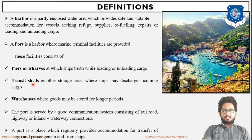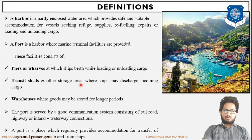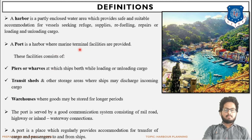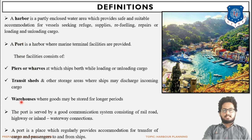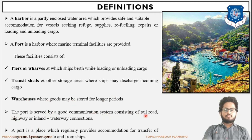Transit shed is a space where goods are stored temporarily — it is a storage area for cargo or commodities where ships may discharge incoming cargo. Warehouse is the area where cargo or commodities are stored for a long duration. Transit shed is for short-duration storage and warehouse is for long-duration storage. The port is also served by a good communication system consisting of rail and roads.